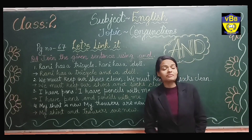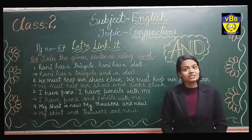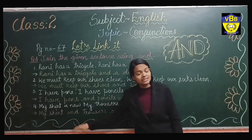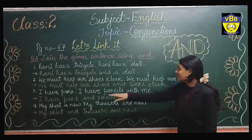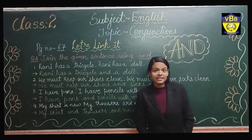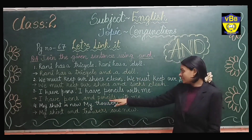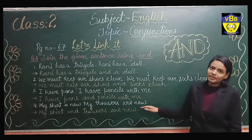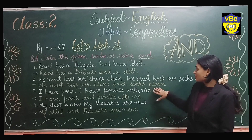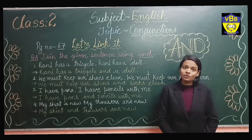In the same way we will do the third sentence. The first part is: 'I have pens' and the second part is: 'I have pencils with me.' So I can write it as: 'I have pens and pencils with me.' I hope you have done question number 1, question number 2, and question number 3 in your book.